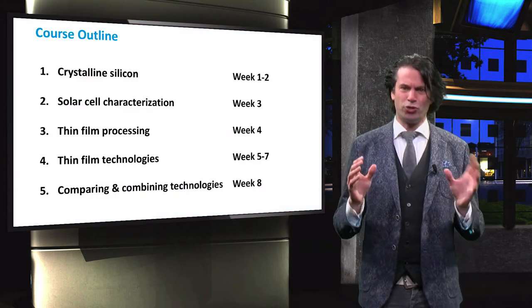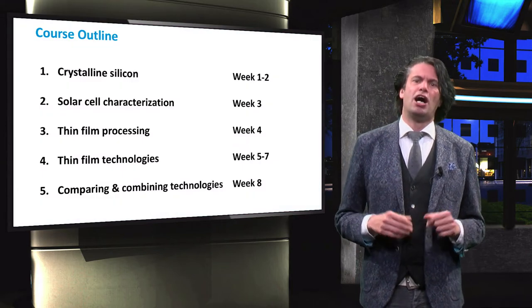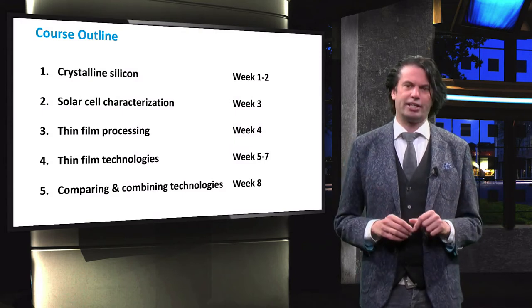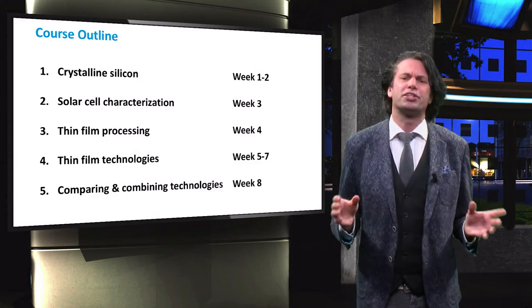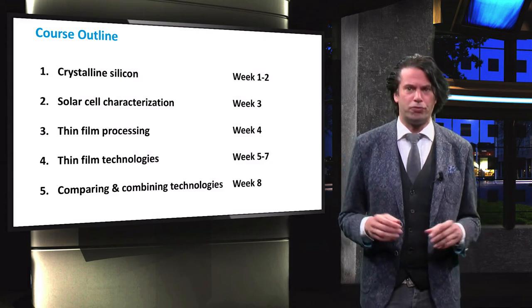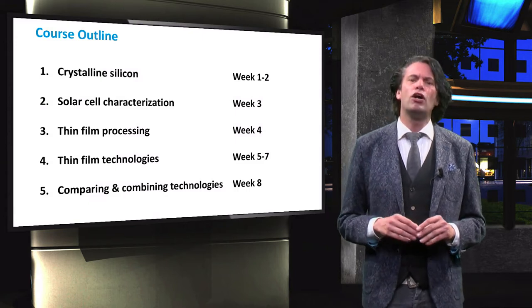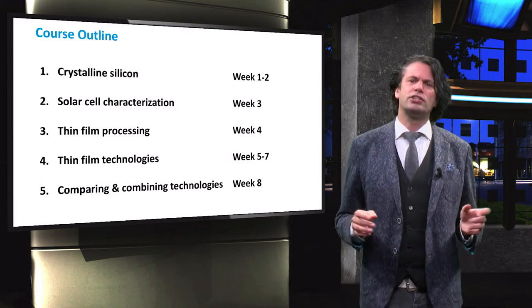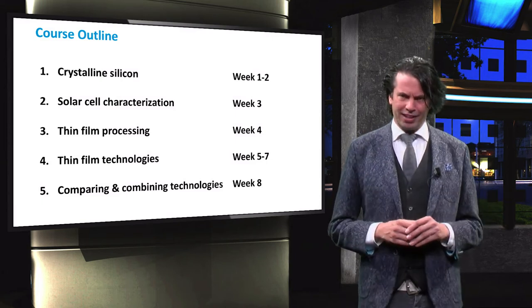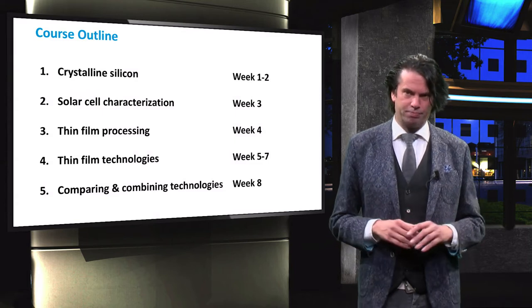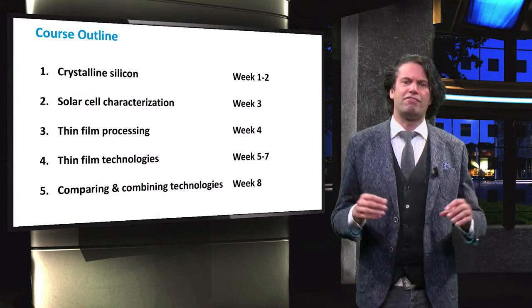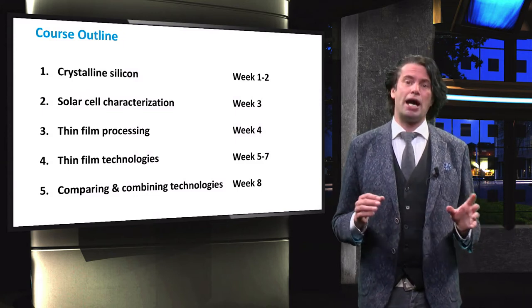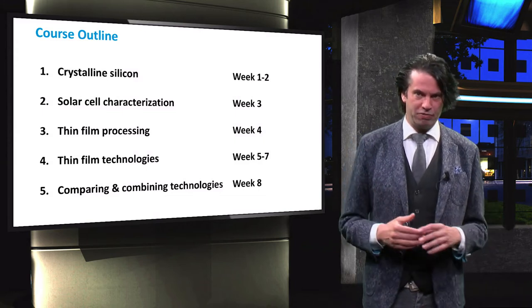The course Photovoltaic Technologies is split into five parts. After a short introduction, the first two weeks will be about crystalline silicon. In week 3 we will discuss the most important techniques used to characterize the performance of solar cells. Then in week 4 we will look into the processing techniques used for thin films. Next, we will spend three weeks discussing the different thin film technologies themselves. Finally, in week 8 we will look at the advantages and limitations of different technologies, and we will discuss some hybrid solar cells that combine multiple PV technologies.